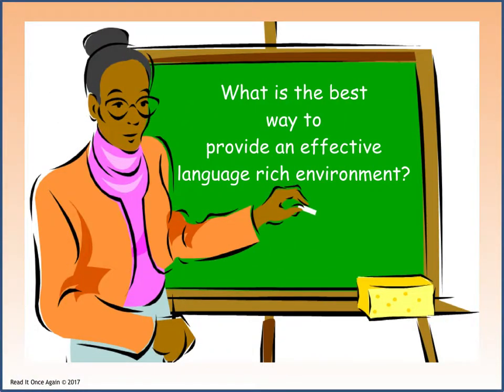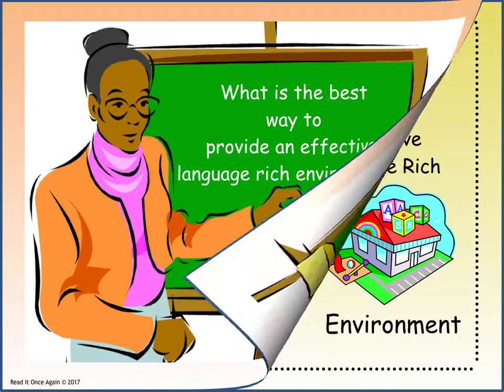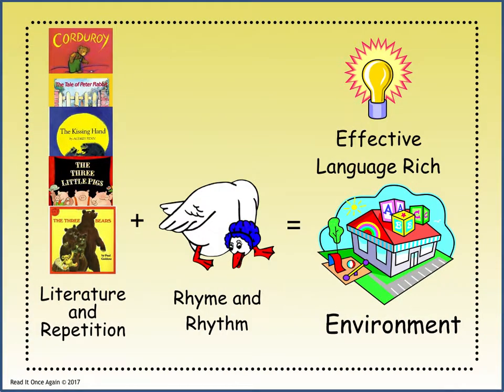What is the best way to provide an effective, language-rich environment? Read It Once Again has proven this to be an effective formula: choose one book, repeat the story and incorporate language and foundational skills using the vocabulary in the story, and in addition to the storybook, add rhyme and rhythm with Mother Goose.